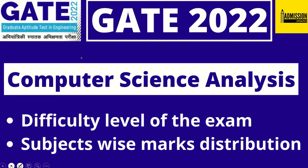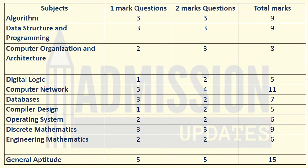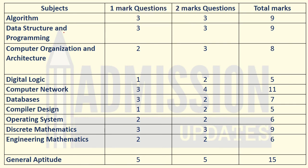Let us start. Here is the subject-wise marks distribution. There were questions from Algorithms — three one-mark questions were asked from Algorithms, and then three two-mark questions, making a total of nine marks from Algorithms.